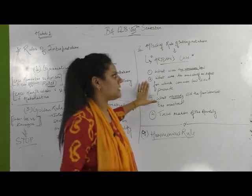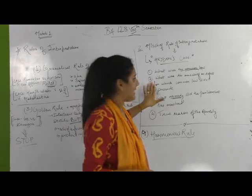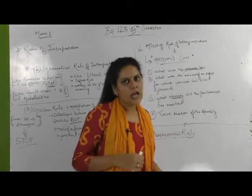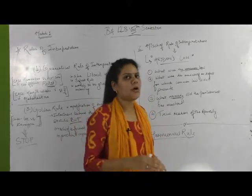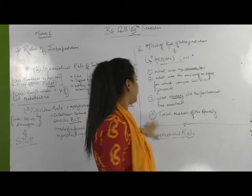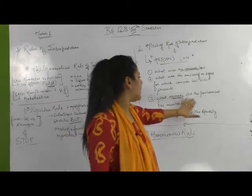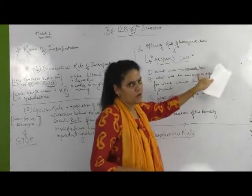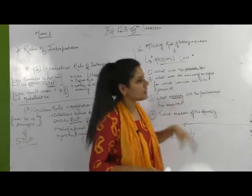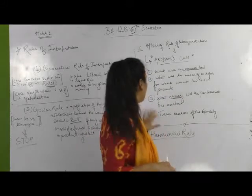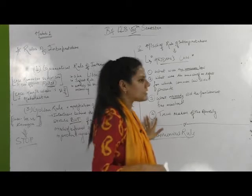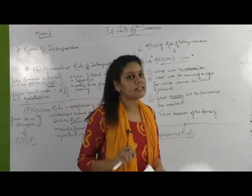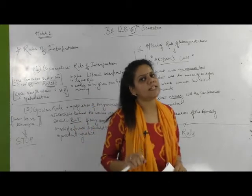The second point, which is most important, is: what exactly is the mischief or defect under the common law which was not provided for, and because of which we are supposed to interpret that law in a different direction. The third is: what remedy did the parliament resolve — any other law besides the common law to change the ambiguity or mischief. The fourth is the true reason for the remedy — one should be well aware of exactly what remedy is being given to the society and how it is valuable.